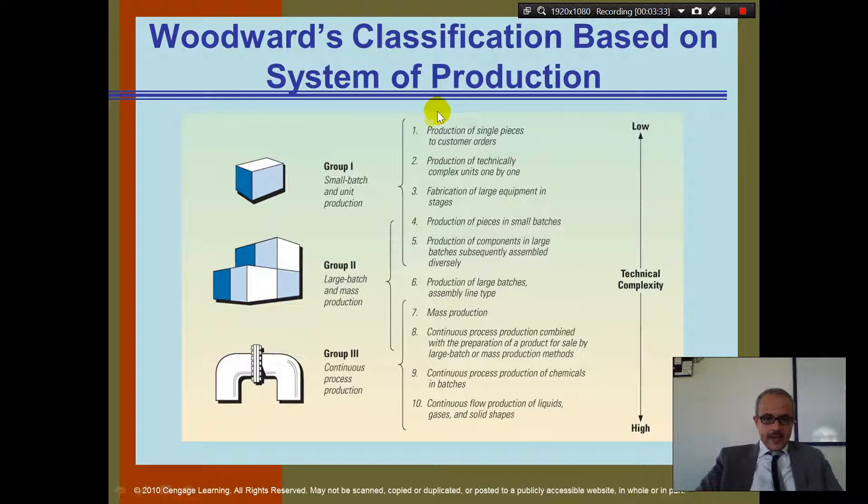Let's look at how they are described here. If you are a small batch, the production of a single piece to a customer order. So, maybe you have one customer order, they produce one for them. Do you know a restaurant that do that? You go, you order a pizza, they make a pizza for you. That's a small batch.